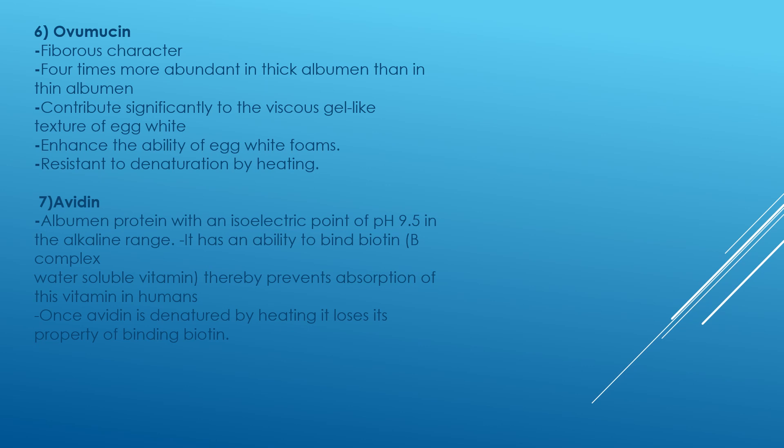Avidin is a protein with an isoelectric point of pH 9.5 in the alkaline range. It has the ability to bind biotin, a complex water-soluble vitamin, thereby preventing the absorption of biotin in humans. Once avidin is denatured by heating, it loses its property of binding biotin. So it is very important that eggs are cooked to allow proper vitamin absorption in our body. The concept of consuming a raw egg is not appreciable.